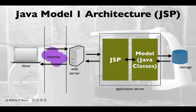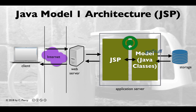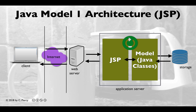With the Java Model 1 architecture, a request is made by the client. The web server will then request that the JSP do some things. The JSP will start the processing and work with the model, which may try to get stuff from storage. Data can be passed back to the application. The JSP will use the data to create the output, and then pass the output back to the web server. The web server will create the response and pass that back to the client over the internet, which will render the results.